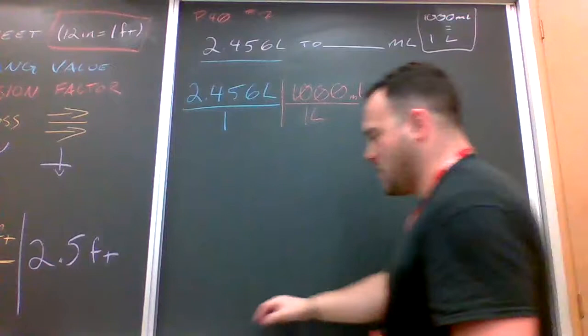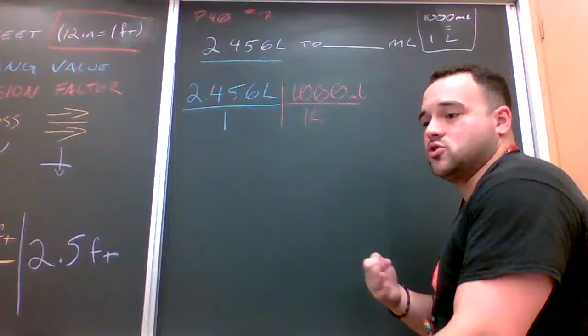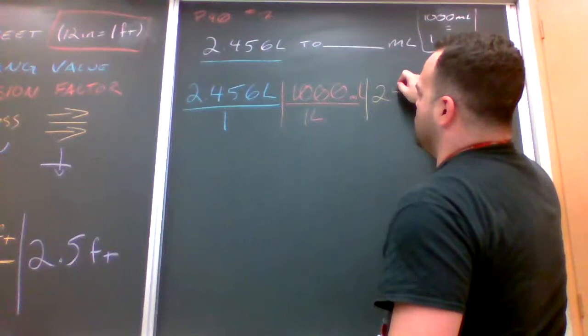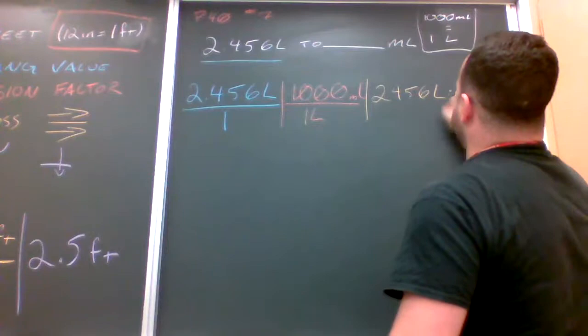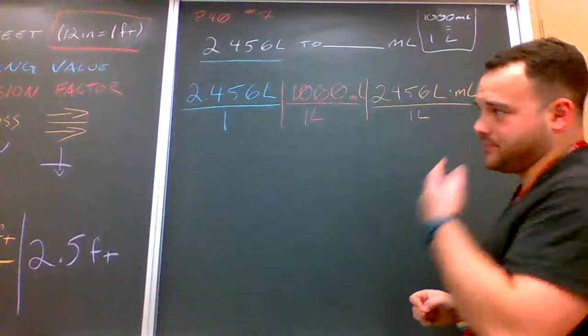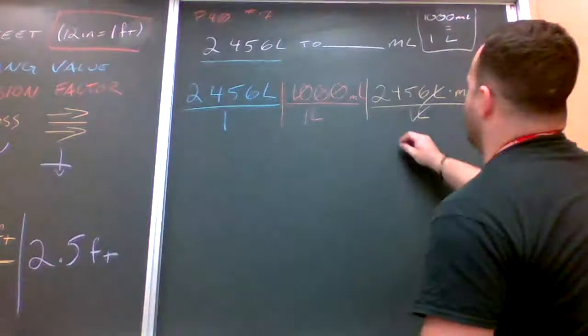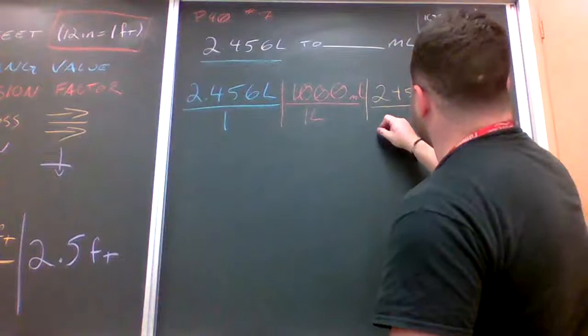I will multiply across. And this is one of the steps that in the future you may be able to get rid of, same with number 4 depending on the way to set up. So multiply that across and you get 2,456 liters times milliliters over 1 liter. And you'll have the unit liter cross off. And then when you divide, you end up with dividing 2,456 by 1, which gives you 2,456 milliliters.